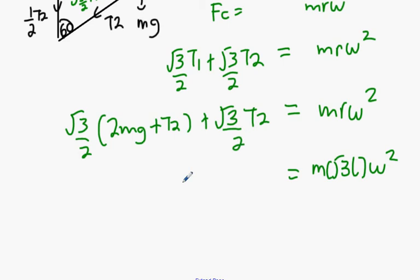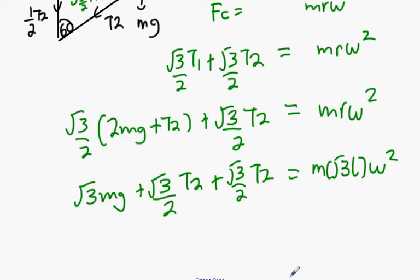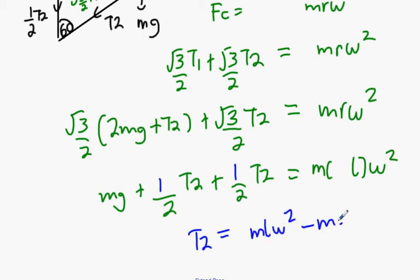Factorize out the T2 maybe? Actually not, but wait one second. Root 3 mg. Will you cancel all the root 3's? I'll just get rid of them, like they're not here. Half T2 plus half T2. T2 equals ml omega squared minus mg.